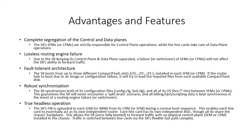Fault-tolerant architecture: the service router boots from up to three different compact flash slots — CF3, CF2, and CF1 — installed in each switch fabric module. If the router fails to boot due to an image or configuration failure, it'll try to load the required files from each available compact flash disk. So if it tries to load SROS from compact flash 3, which it reads by default, and that fails, it'll try to load the secondary image, which is also on CF3. But if the primary and secondary images fail, it'll move over to the compact flash in slot 2 and try to load the OS from there.